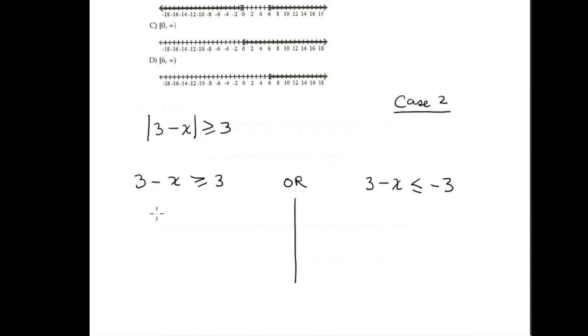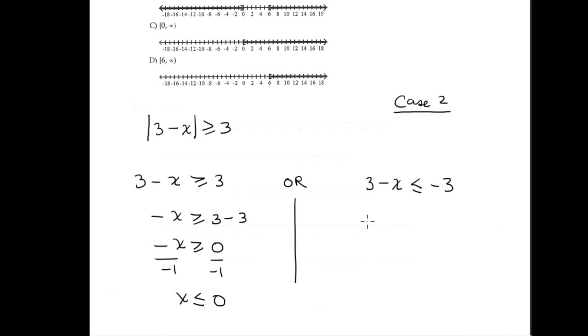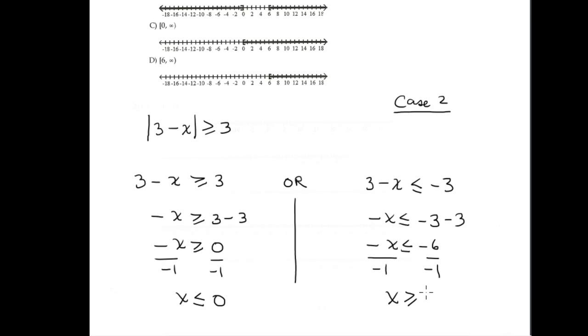Solving the first part: -x ≥ 3, subtract 3, giving -x ≥ 0. Dividing by negative one flips the sign: x ≤ 0. For the second part: -x ≤ -3, subtract 3, giving -x ≤ -6. Dividing by negative one flips the sign: x ≥ positive 6.